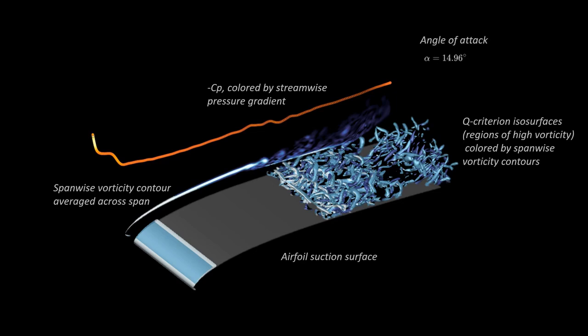The video begins at the instance when the airfoil has pitched up to an alpha where a separated shear layer is established at the leading edge and undergoes a Kelvin-Helmholtz instability at the rear of the airfoil, shedding vortices which are convected downstream. They develop span-wise fluctuations and transition to turbulence downstream.